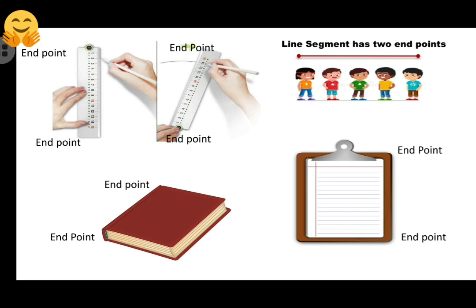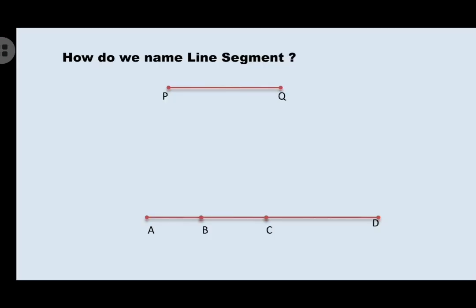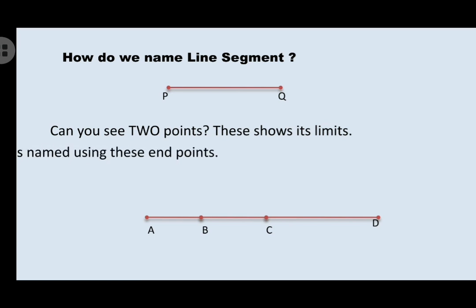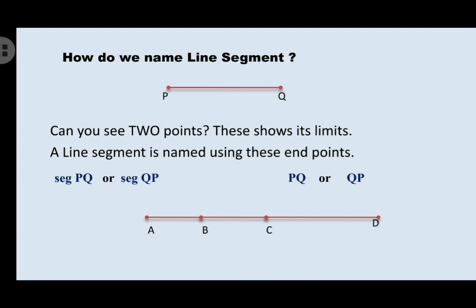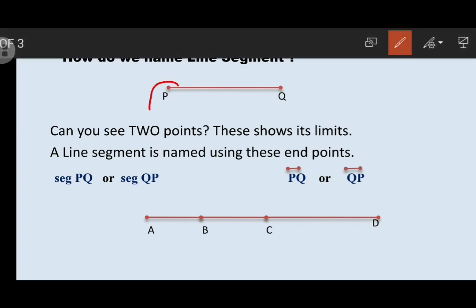Now, let us learn how do we name line segment. Can you see two points, point P and point Q? Using these two endpoints, we can name the line segment. Write endpoint names together. You can write in both ways, PQ or QP. You can see here it can be denoted by the segment symbol.